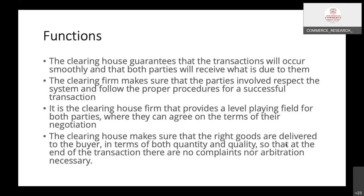This is very important in commodity trading. The clearing house ensures the right goods are delivered to the buyer in terms of both quantity and quality, so that at the end of the transaction there is no compliance nor arbitration necessary. In commodity markets, the contract specifies the same quality and quantity of the commodity to be exchanged at maturity. The clearing house ensures this, so that future compliance and arbitration processes can be avoided.